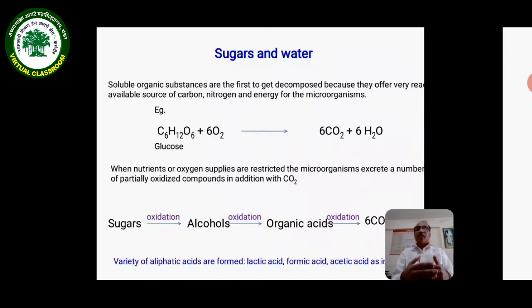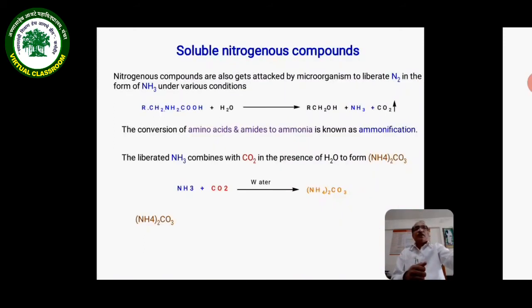Sugars on oxidation get converted into alcohols, and alcohols on oxidation produce various organic acids including lactic acid, formic acid, and acetic acid. These organic acids on further oxidation release carbon dioxide and water.